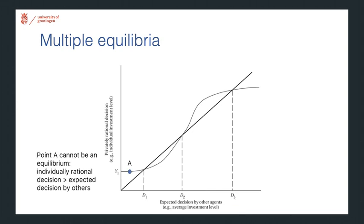If we look more closely, we can see that point A marked here cannot be an equilibrium. Why not? Because at point A, what is rational for an individual would be higher than what they expect others to do.